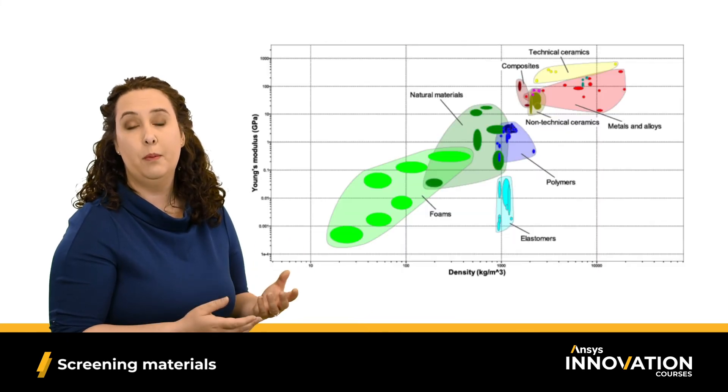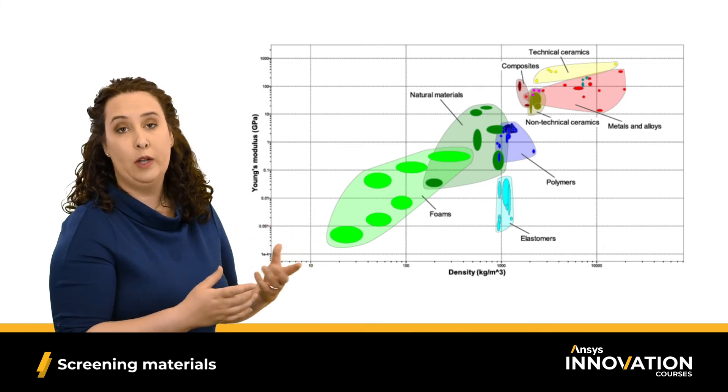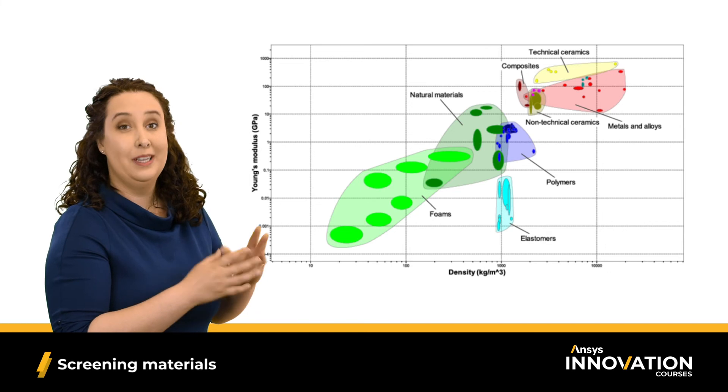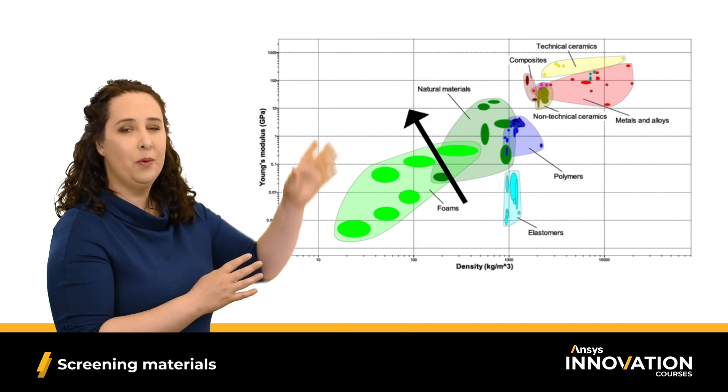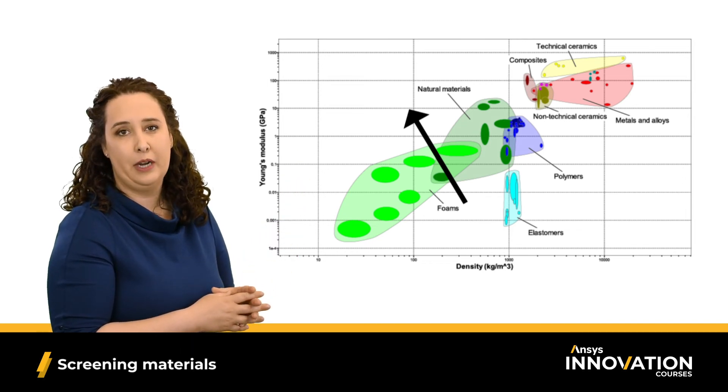I can also do this with bubble charts. Here, we're really focusing on which of these four quadrants I want to have my material reside in. So let's say I'm shooting for this optimal upper left-hand corner. So I'm simply going to focus all of my attention in this direction.